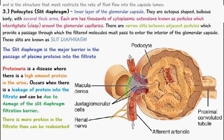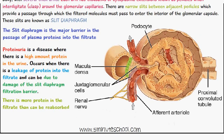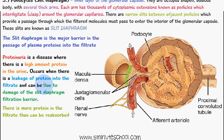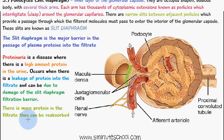Proteinuria is a disease where there is a high amount of protein in the urine. It occurs when there is leakage of protein into the filtrate, and it can be due to damage of the slit diaphragm filtration barrier. If the slit diaphragm is damaged, more plasma proteins pass into the filtrate. While some proteins like albumin can be reabsorbed in the proximal convoluted tubule, in proteinuria there is more protein than can be reabsorbed, leading to elevated protein levels in the urine.